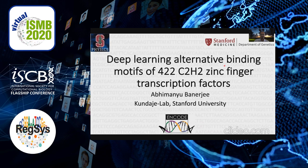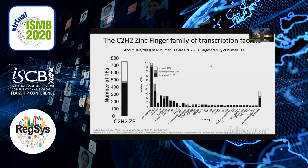The C2H2 family of zinc finger transcription factors is basically the largest family of transcription factors in humans. It's about half of all human TFs and there are around 800 of them. But the DNA binding preferences for many of these transcription factors are not very well known.